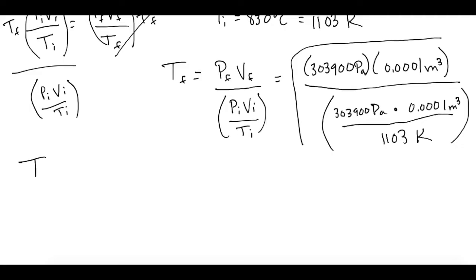So final temperature in this case is going to give us 367.667 Kelvin minus 273 gives us 94.6 degrees Celsius or 95 degrees Celsius.